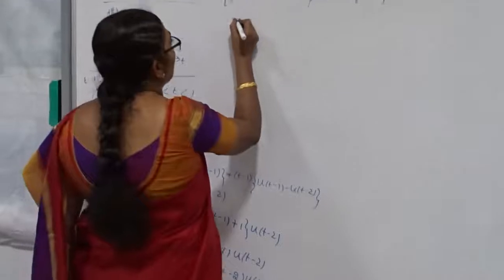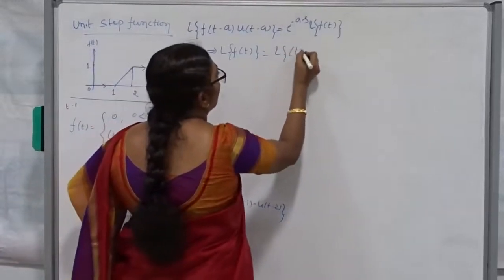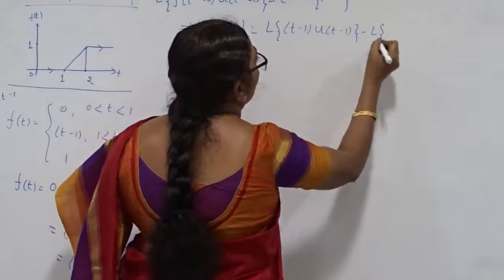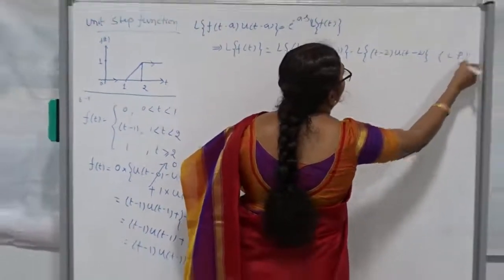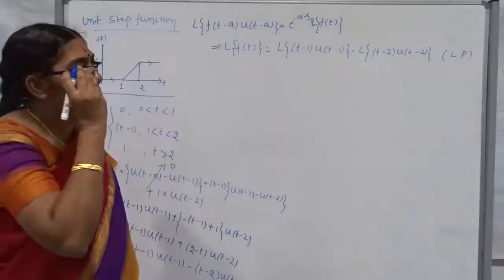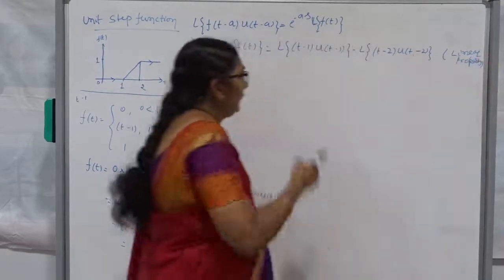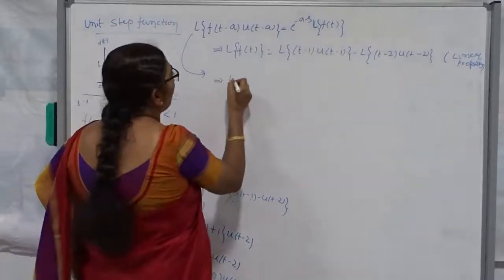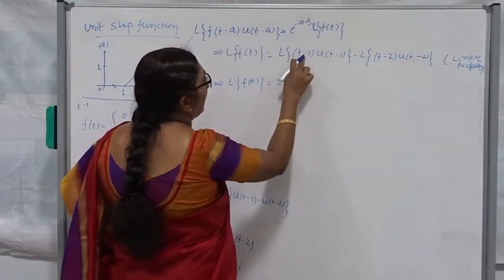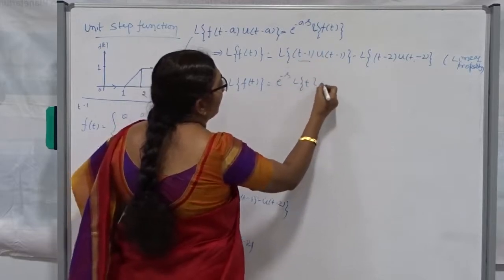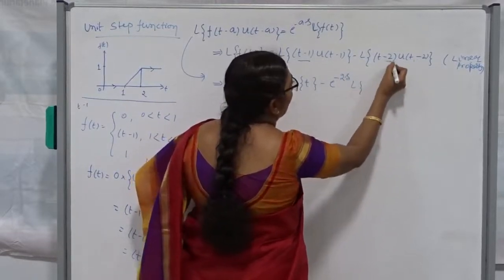Applying Laplace Transform on both sides using the linear property: L{f(t)} = L{(t minus 1) u(t minus 1)} minus L{(t minus 2) u(t minus 2)}. From the shift formula, this equals e^{minus s} times L{t} minus e^{minus 2s} times L{t}. Using L{t^n} = n! / s^{n+1}, which gives L{t} = 1/s^2, we get e^{minus s} times (1/s^2) minus e^{minus 2s} times (1/s^2).